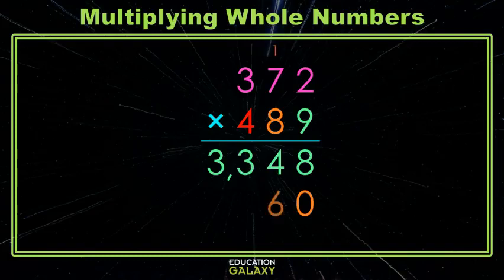2 times 8 is 16, carry the 1. 7 times 8 is 56, plus the 1 we carried is 57, carry the 5. 3 times 8 is 24, plus the 5 we carried is 29. And if you'd like, you can put a comma there.